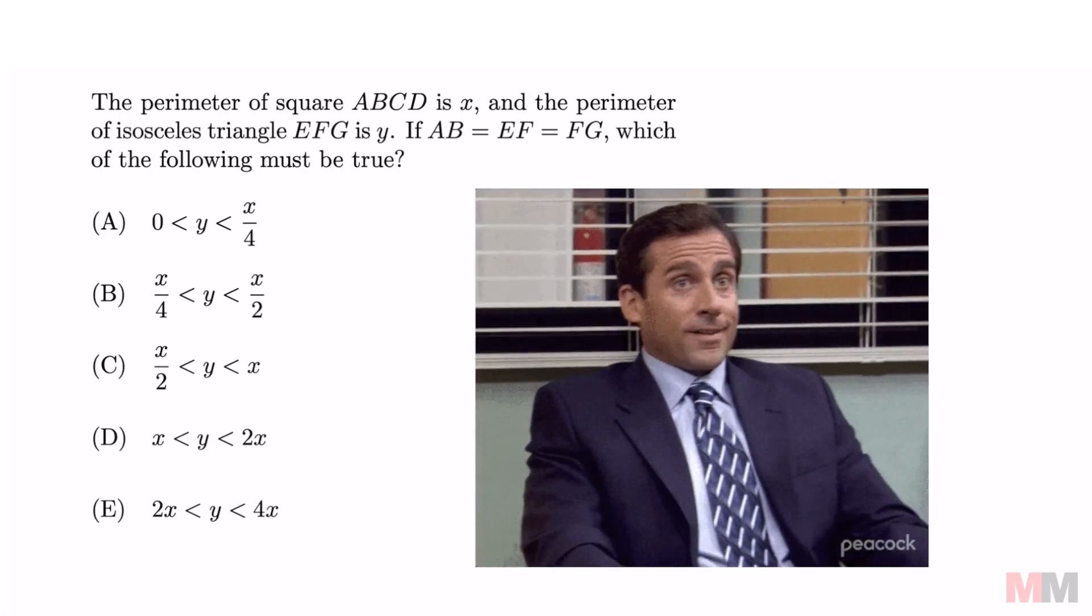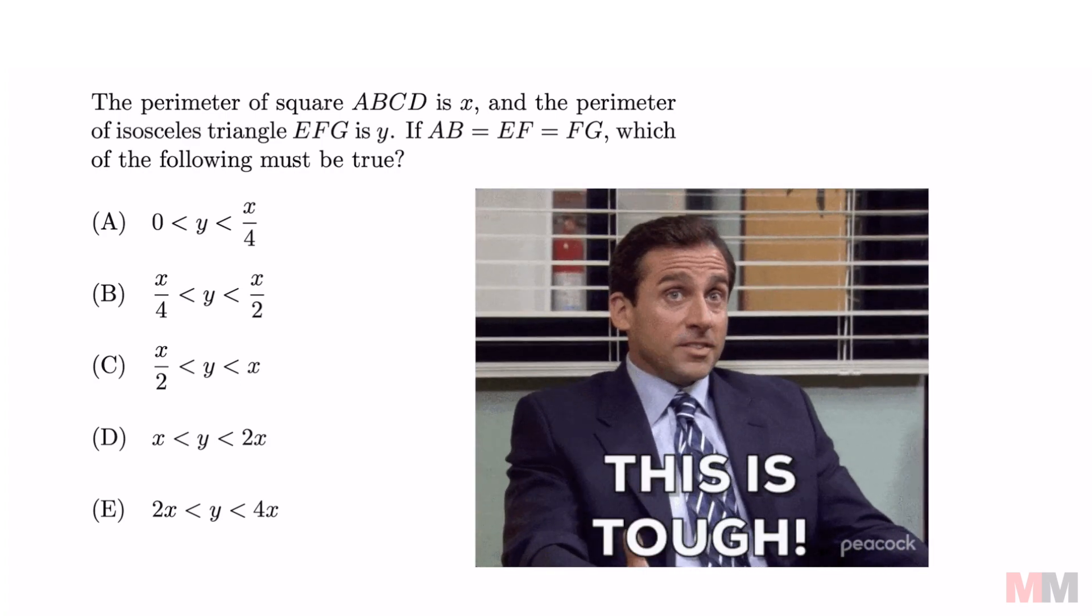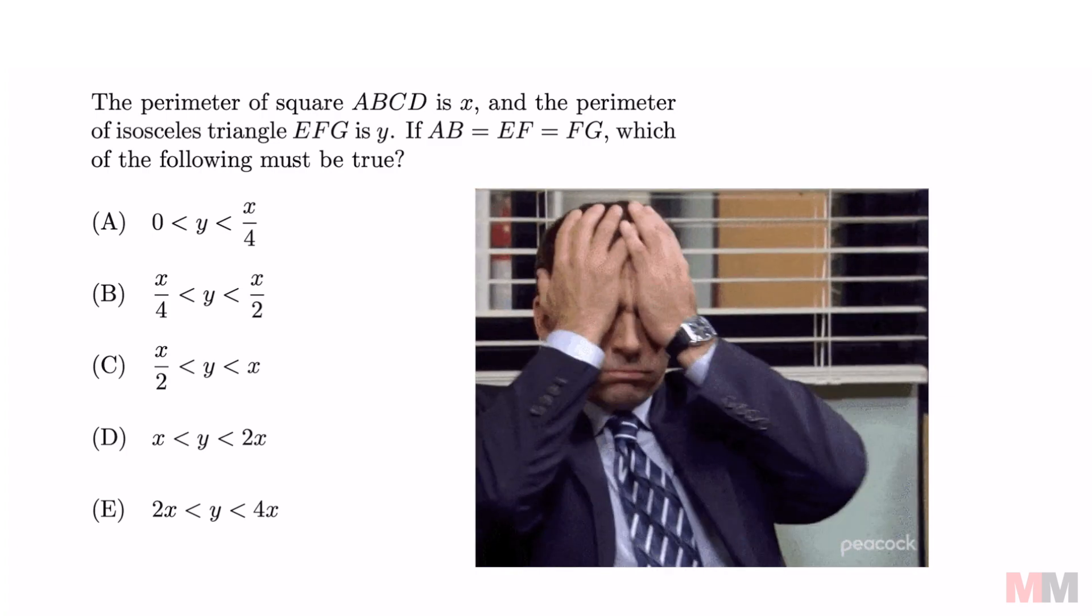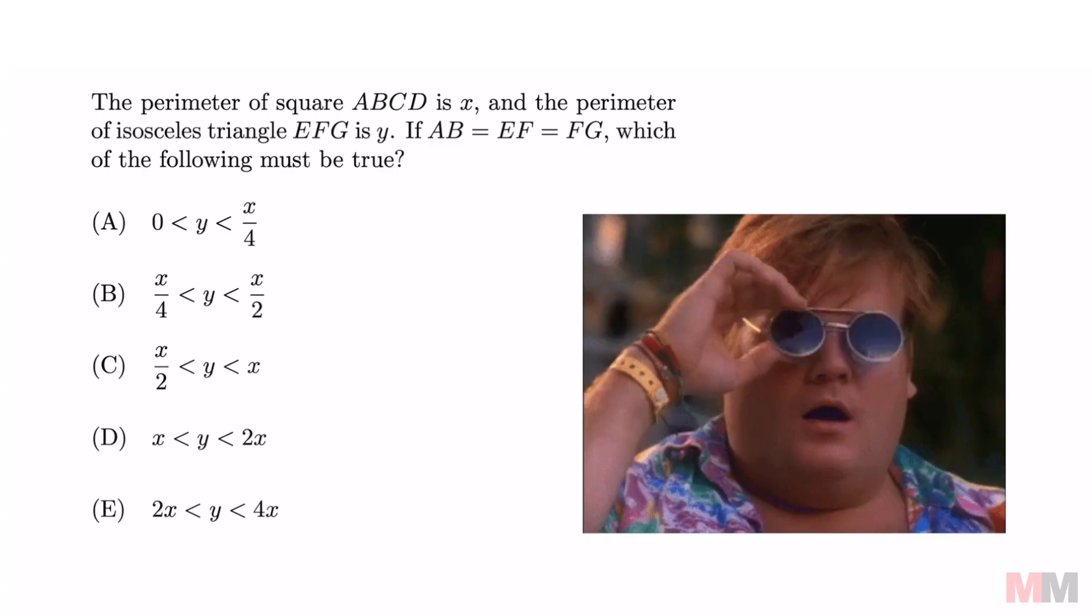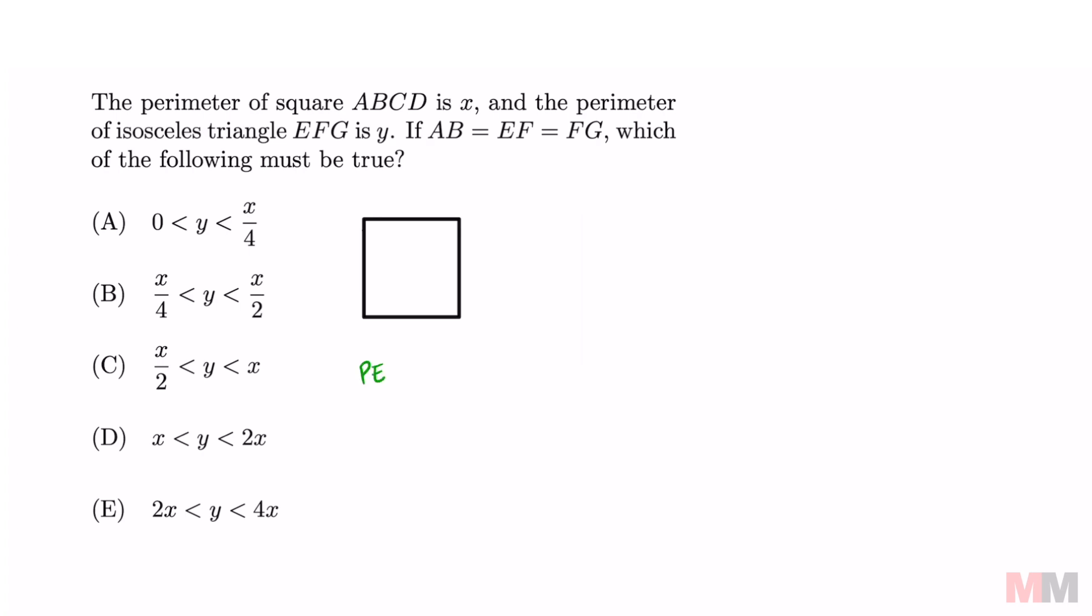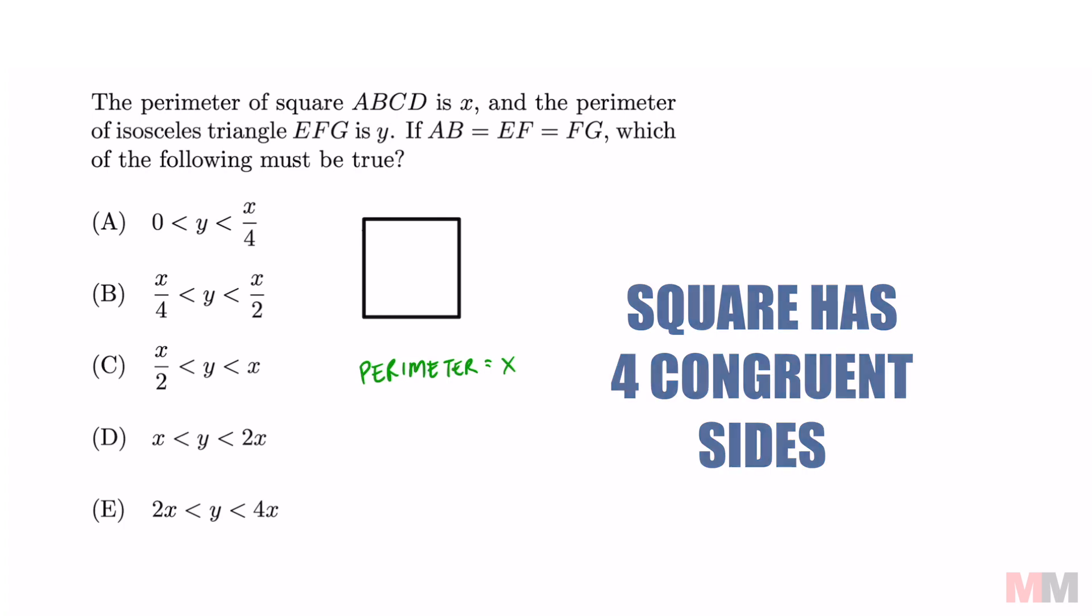This is one of the harder perimeter questions that I ran into. We got the perimeter of a square ABCD is X. Let's go ahead and draw that so we can see this visually. If the perimeter of this square is X, we can divide X by 4 to represent each side.